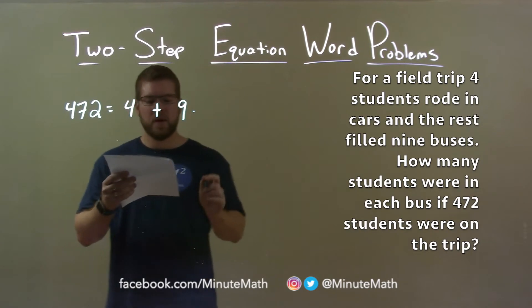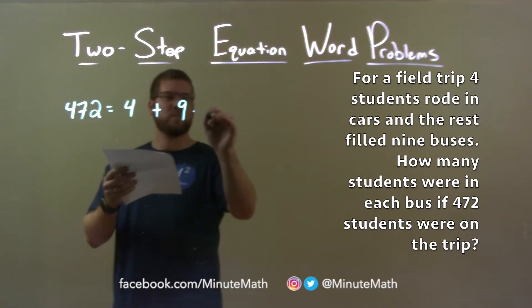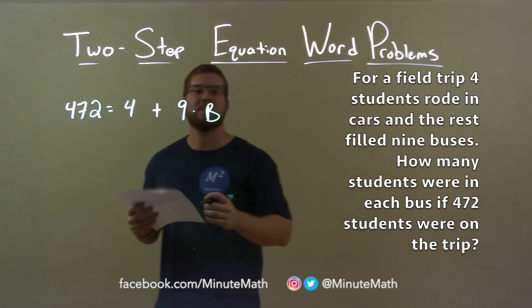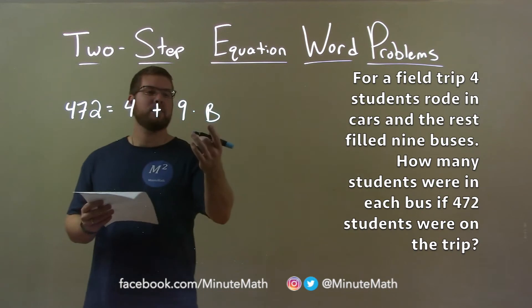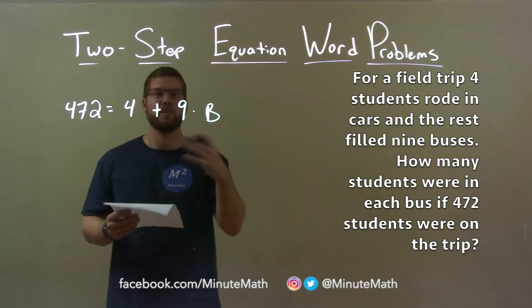So nine buses times how many students rode each bus - we'll make that letter B. Nine buses and then B represents the number of students on each bus. So nine times B would be the total number of students who rode buses.